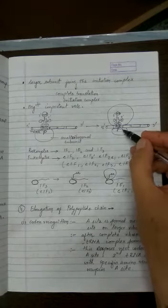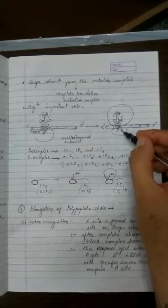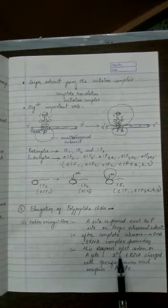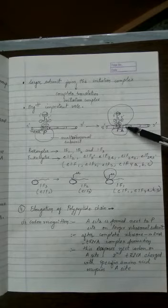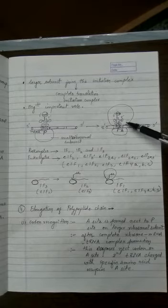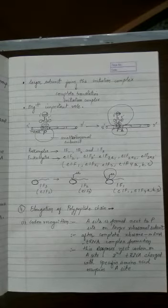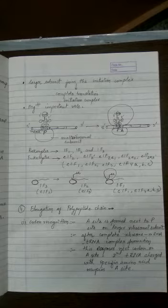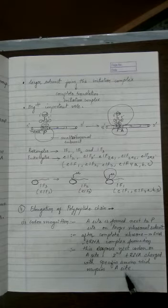The A site is here, and the next codon will come and be exposed at the A site. The second tRNA, which is charged with a specific amino acid, will occupy the A site according to the complementary base pairing rule. For example, if UUU is present at the A site, the anticodon will carry AAA — and we know UUU codes for phenylalanine. So the second tRNA carrying AAA, also carrying its amino acid at its 3' end, will come and sit at the A site.